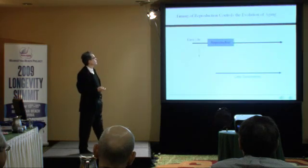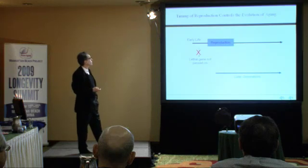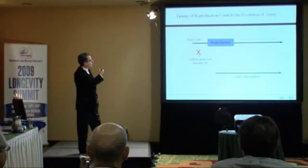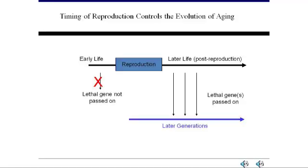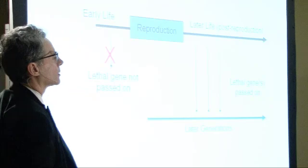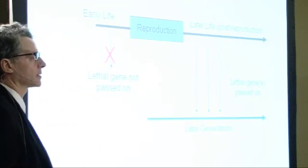Basically what this means is the timing of reproduction controls the evolution of aging. And just to be crude about it, we have an animation: if a gene is going to kill you with certainty and it kills you before reproduction, natural selection will completely clean it out. After the last stage of reproduction, if a gene will kill you with complete certainty, natural selection doesn't care — and things get ugly. And in between, you have that smooth transition.